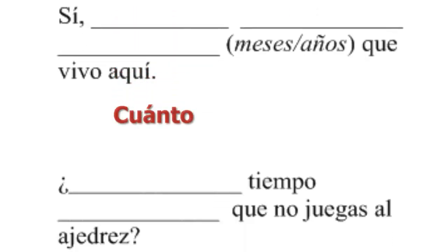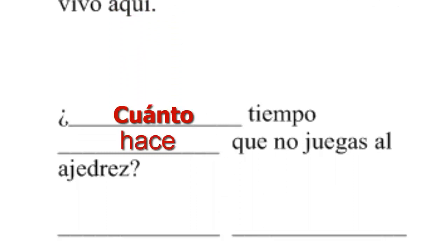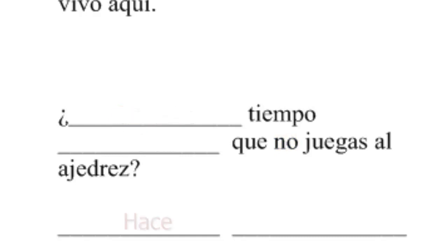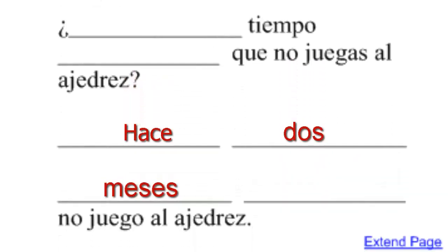Next one uses a negative verb: no juegas al ajedrez — you don't play chess. How long has it been that you don't play chess — in other words, how long has it been since you played chess? Hace dos meses que no juego al ajedrez. So the structure is: hace + period of time + que + present tense clause.